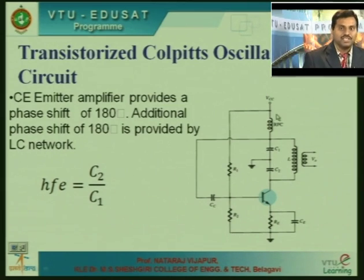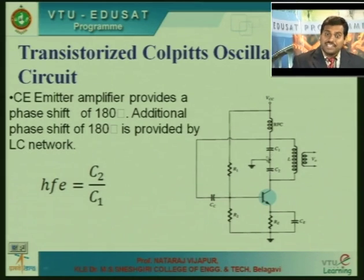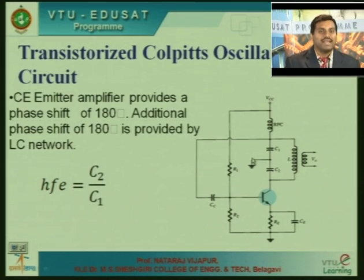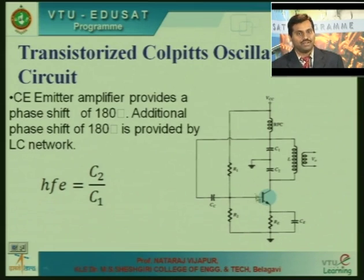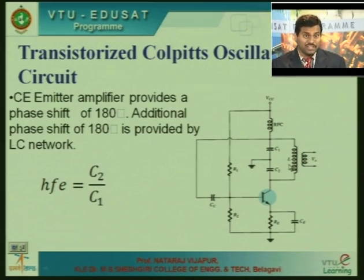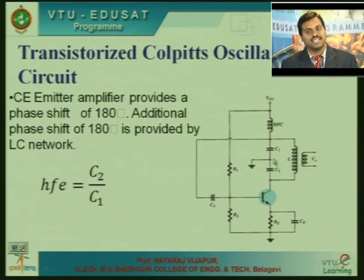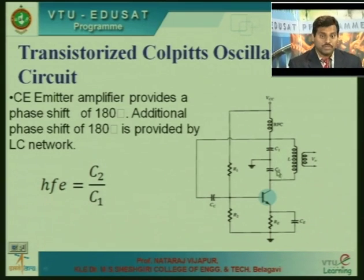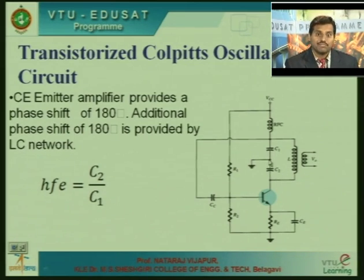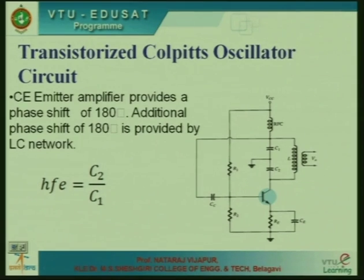In the Colpitts oscillator, the capacitance voltage is divided and supplied back to the amplifier input. The mutual inductance is used for output coupling, but does not affect the frequency of oscillations as it is the capacitance feedback that determines frequency. This is how LC oscillators operate.